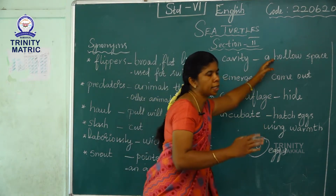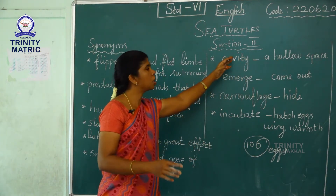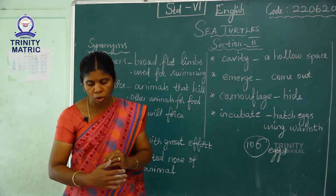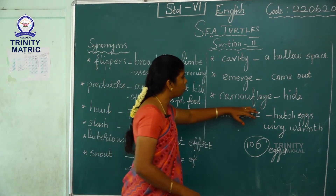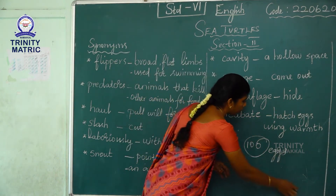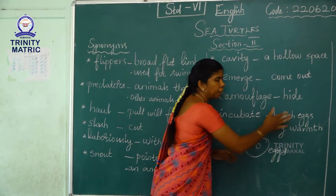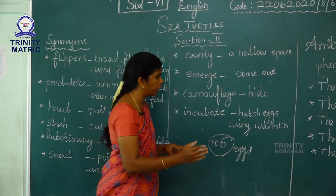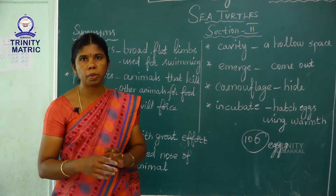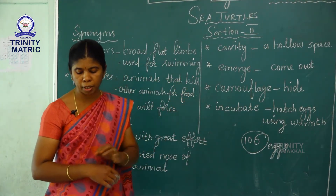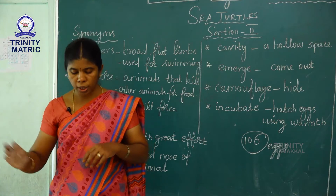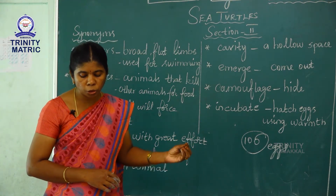Once all the eggs are laid, the turtle fills in the cavity again — filling the hollow space — because some animals or humans might spoil the eggs. Then it camouflages the nest by tossing sand on it using its flippers. Camouflage means to hide or disguise. After hiding the nest with sand, the turtle returns to the sea, and the eggs are left to incubate under the warmth of the sun.